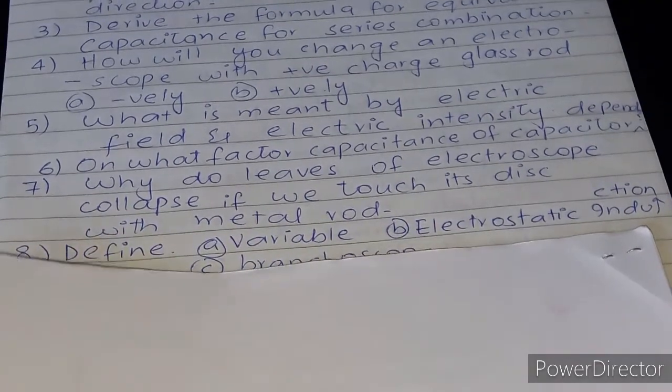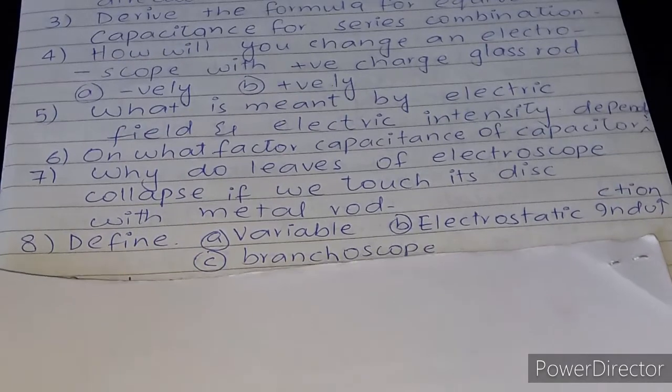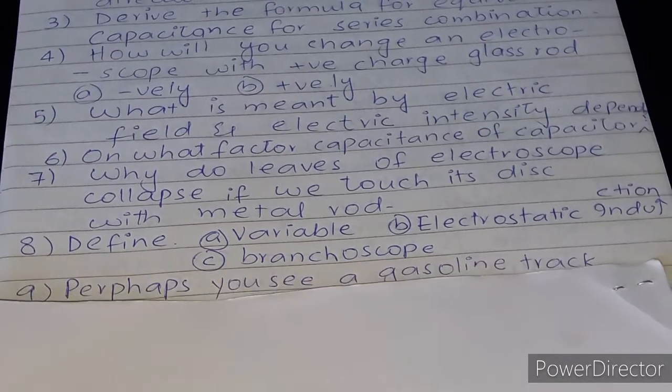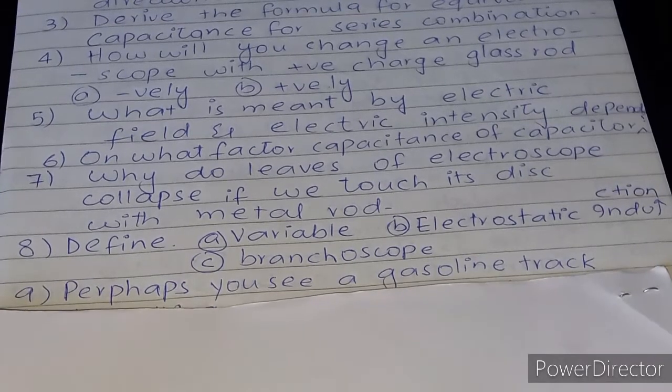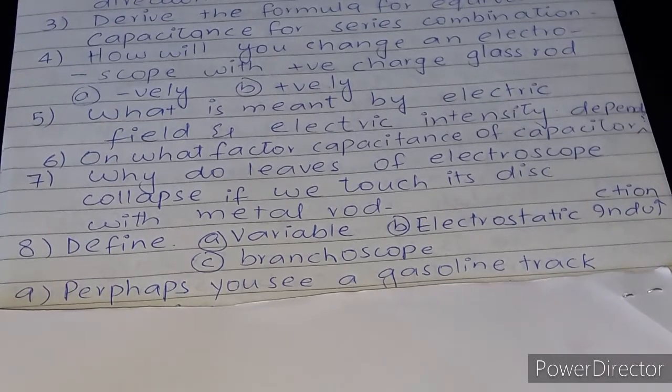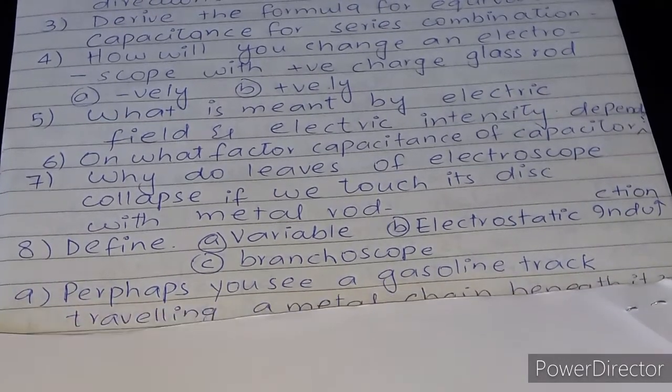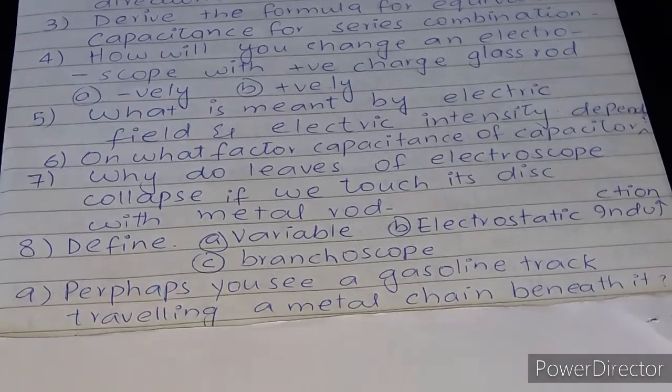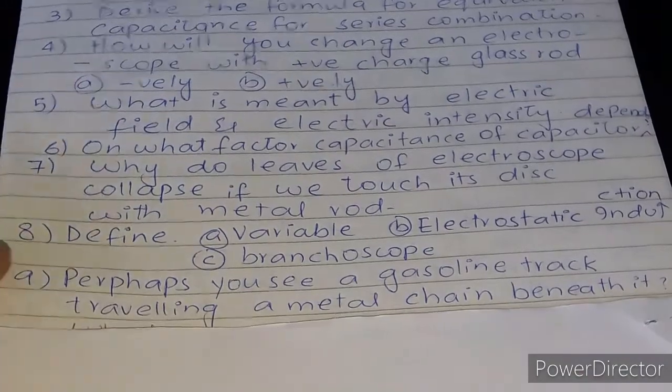Define variable, electric induction, and branch scope. Question number 9: Perhaps you see a gasoline truck travelling with a metal chain beneath it.